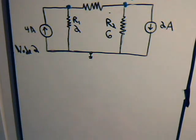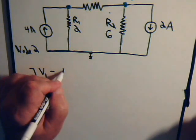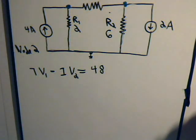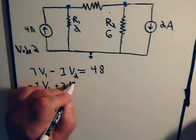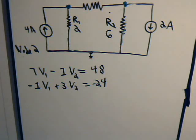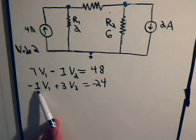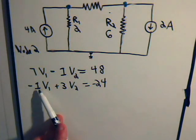Okay, so we have this equation: 7V1 - 1V2 = 48, and then we had -1V1 + 3V2 = -24. These are simple enough; we don't have to use determinants to solve it, but let's do that anyway. So to solve this simultaneous equation using determinants, first thing we do is make a two by two determinant with these column numbers: 7, -1, -1, 3.